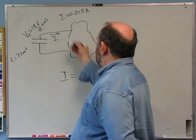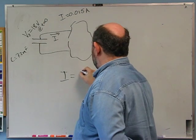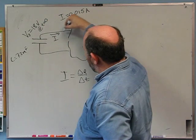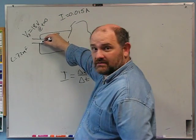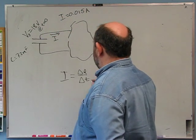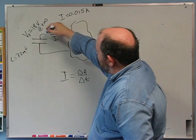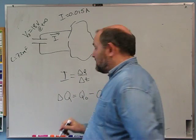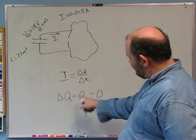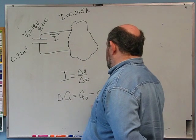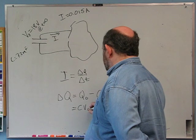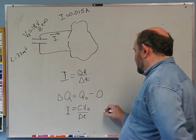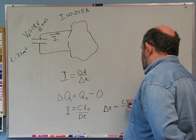I is charge per time, so charge per time crossing this point — coming out of the capacitor — so I is delta Q over delta T. The total delta Q equals the initial charge minus zero, because it starts with that much charge and ends with zero. We know Q_0 equals C times V_0. So C times V_0 over delta T equals I, and delta T equals C times V_0 over I.